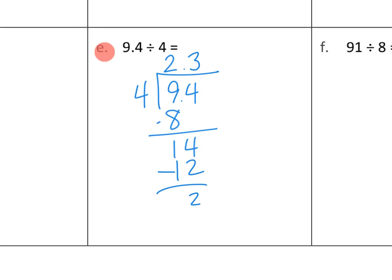Let's decompose our 2 tenths into 20 hundredths. Now that we have 20 hundredths, we can put 5 hundredths in each of our 4 groups. 4 groups with 5 hundredths each gives us 20 hundredths total — we've used up all 20 hundredths with no remainder. So our quotient is 2.35.